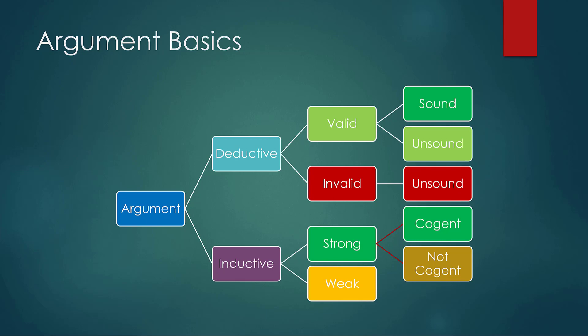If you decide the argument is valid — and to confirm this you'd want to do a truth table or diagram of proof — the next question is: sound or unsound? Sound means it's valid, so if all the premises were true the conclusion must be true, and it actually does have all true premises. Sound is like the diamond standard of arguments. If you somehow knew an argument was sound, you'd know the reasoning is perfect, the premises are true, the conclusion is true. Many philosophers like Descartes have tried to present sound arguments to establish absolute certainty — spoiler: they failed.